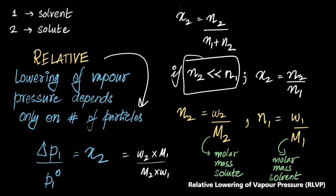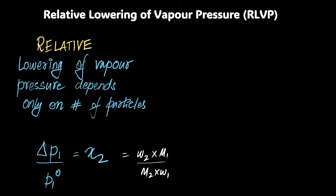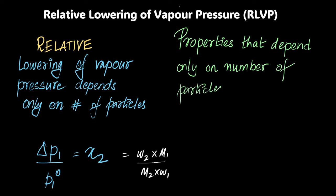That's why we've been studying relative lowering of vapor pressure in the first place or RLVP. I'm going to end this video with one really important idea. That this concept that properties that depend only on number of particles, they are really, really special and collectively such properties are known as colligative properties. You're going to hear this a lot in this chapter solutions.